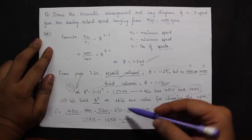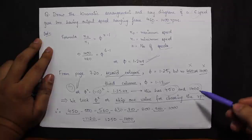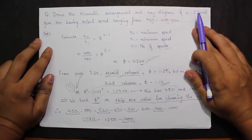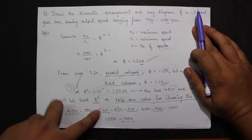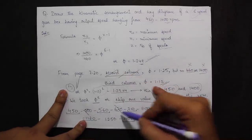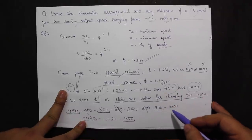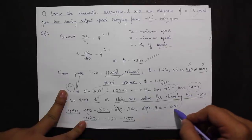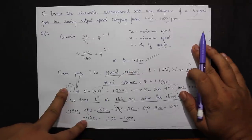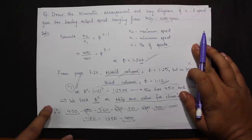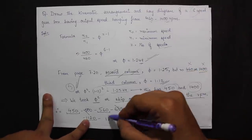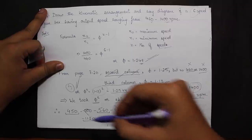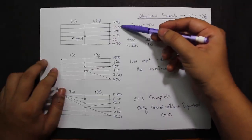Taking the first value as 450 (decimal removed), I skip 500 and take 560, skip 630 and take 710, skip 800 and take 900. Since only one column can be chosen — first or last — I skip 1000 and select 1120, then skip 1250 and take 1400 as the last speed. These six speeds — 450, 560, 710, 900, 1120, 1400 — are selected from column 3.